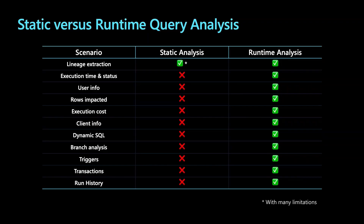Lastly, the nature of transactions. If a transaction fails, the statement you're talking about may never be committed — again, you only know this at runtime. So static analysis will give you a lineage, true, but with a big asterisk. It's going to miss out on a slew of valuable information that's only available to you at runtime.